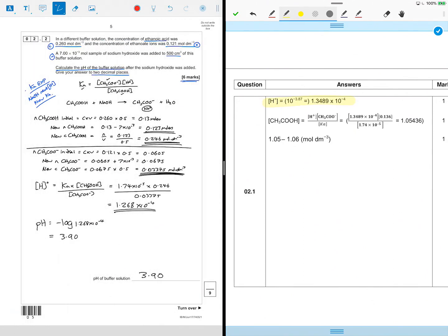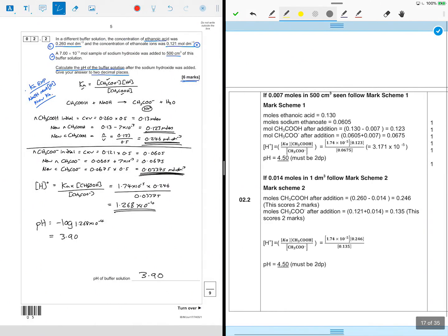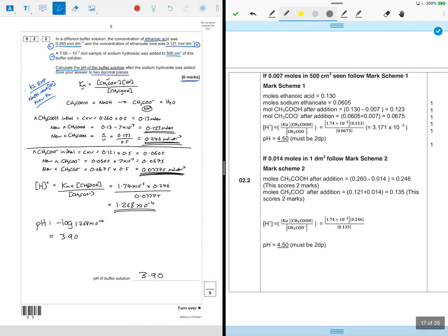Onwards to the buffer calculation. What are we looking at here? If 0.007 moles in 500 centimeter cubed, follow mark scheme one. If 0.014 moles in one decimeter cubed, follow mark scheme two. I did it to one decimeter cubed because I actually found real concentration, so the 0.014 moles.